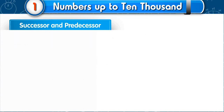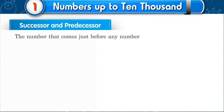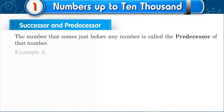The number that comes just before any number is called the predecessor of that number. Example 2.